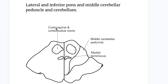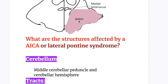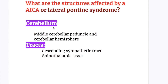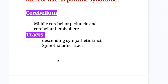Where is the lesion in anterior inferior cerebellar artery syndrome? The lesion is in the lateral and inferior pons, middle cerebellar peduncle, and the cerebellum. What structures are affected by AICA or the lateral pontine syndrome? One brain structure: cerebellum and the middle cerebellar peduncle. Two tracts: one descending sympathetic tract and one ascending spinothalamic tract.